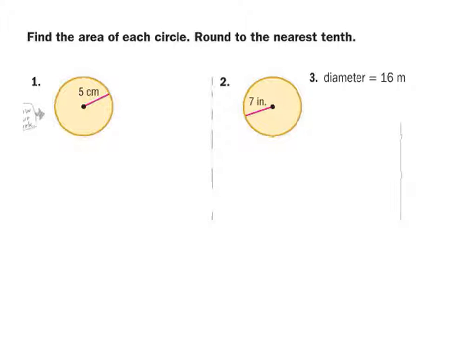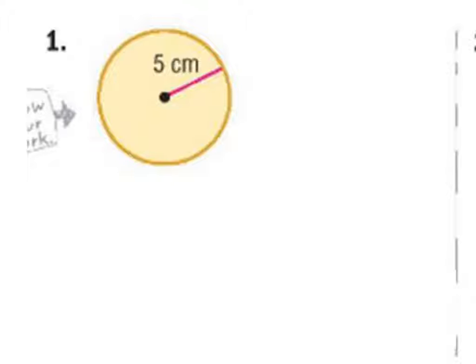By the way, on this number three, the diameter of this one is 16 meters. What would the radius be? Eight meters. All right, good. So, how would we find the area of the circle? Five times pi squared. It's five squared times pi, right? So, 25 times pi. Seventy-eight point five centimeters squared. Thank you.